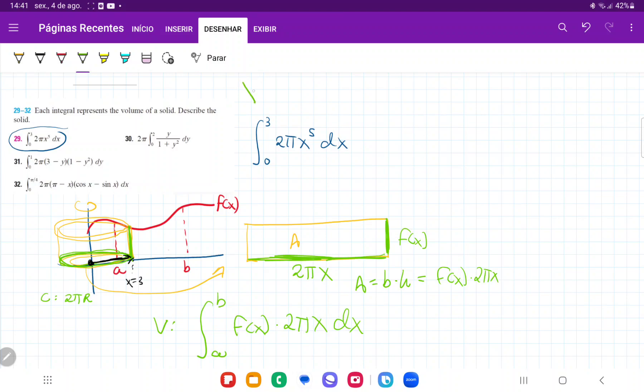And so if we compare it with this integral right here, we can see that a is equal to zero, b is equal to three. So we can say that the solid is, well, we know the boundary. What else do we know?